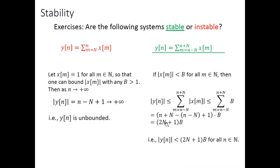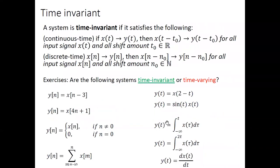We've now learned four properties: memoryless, causal, invertible, and stable. There are two properties left: time invariance and linearity. These two are placed last because they are the most important, and they connect directly to the next chapter on linear time-invariant systems.